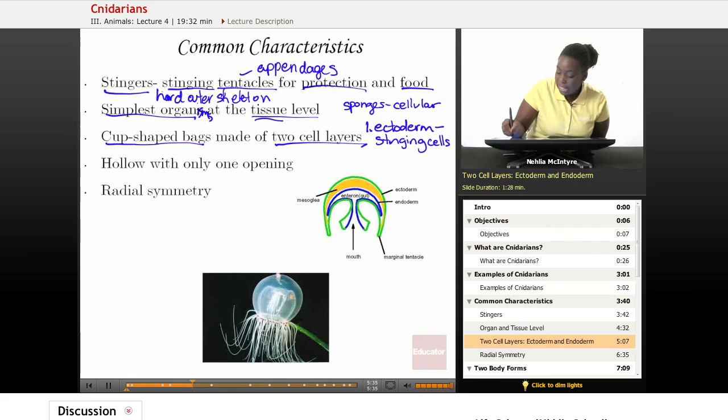The second layer is called the endoderm. And that's an inner cell layer that helps to protect the gut cavity or where the digestive system is found inside of the Cnidarian. So it covers the digestive cavity of the Cnidarian.